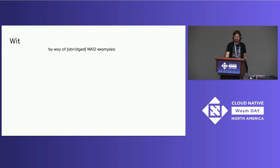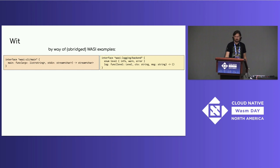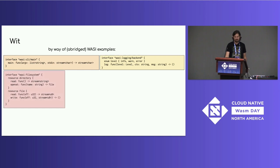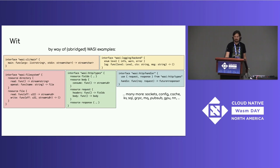Showing WIT by way of abridged WASI examples: WASI could define a WASI CLI main interface with a main function that takes an argv list of strings, standard in as a stream of chars, and returns standard out as a stream of chars. There could be a logging backend interface with a log function taking a log level and two strings. A WASI file system interface defining resource types for directories and files with appropriate operations. And separately, a WASI HTTP types interface defining resource types for HTTP — things like fields, body, requests, and responses — and building on that, a handler interface with a handle function that takes a request and returns a future response. These interfaces can be small, modular, and focused on just one task.